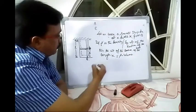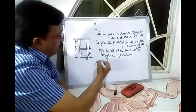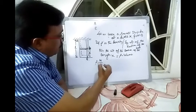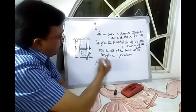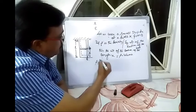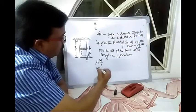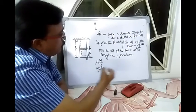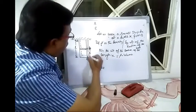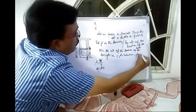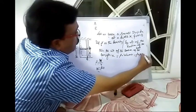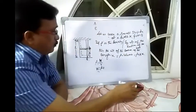We know that rho is equal to mass by volume or weight by volume. Then the weight is equal to rho into V. So the volume here is equal to A into x. Therefore, the weight equals rho A x.